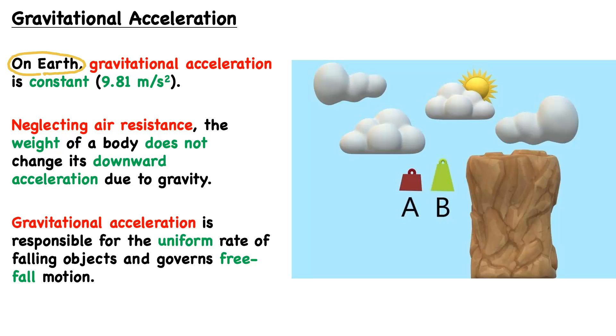Here on Earth, we have one fixed gravitational acceleration, which is equal to 9.81 meters per second squared. This means every second, the speed of a falling object in Earth's gravity will increase by 9.81 meters.